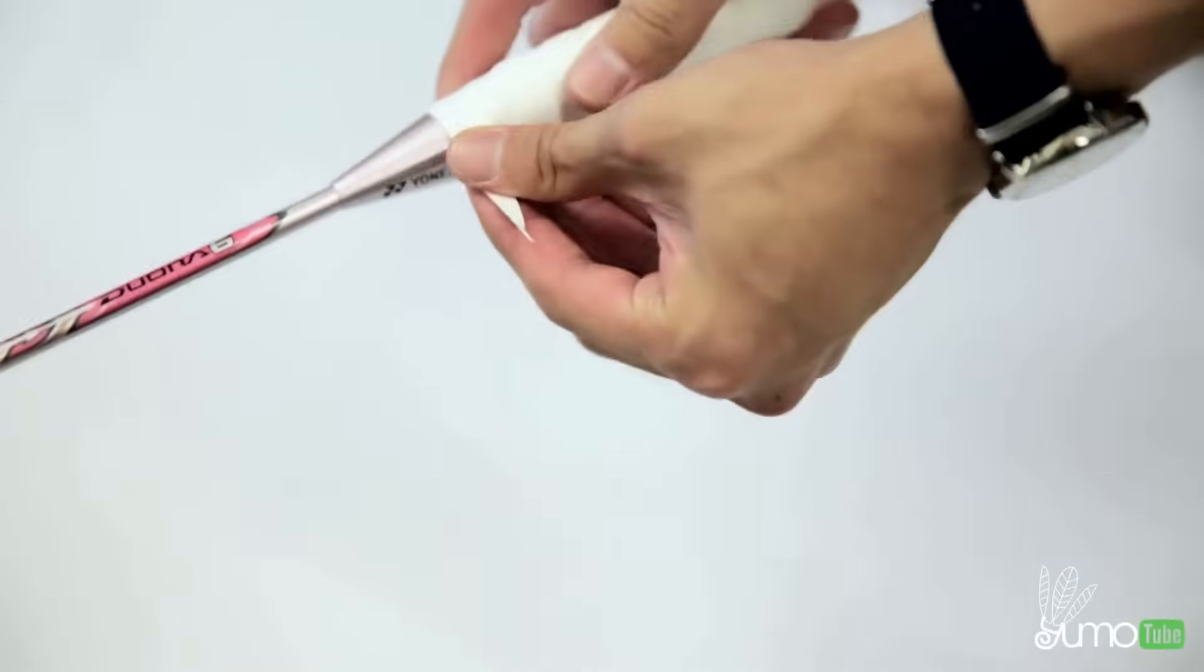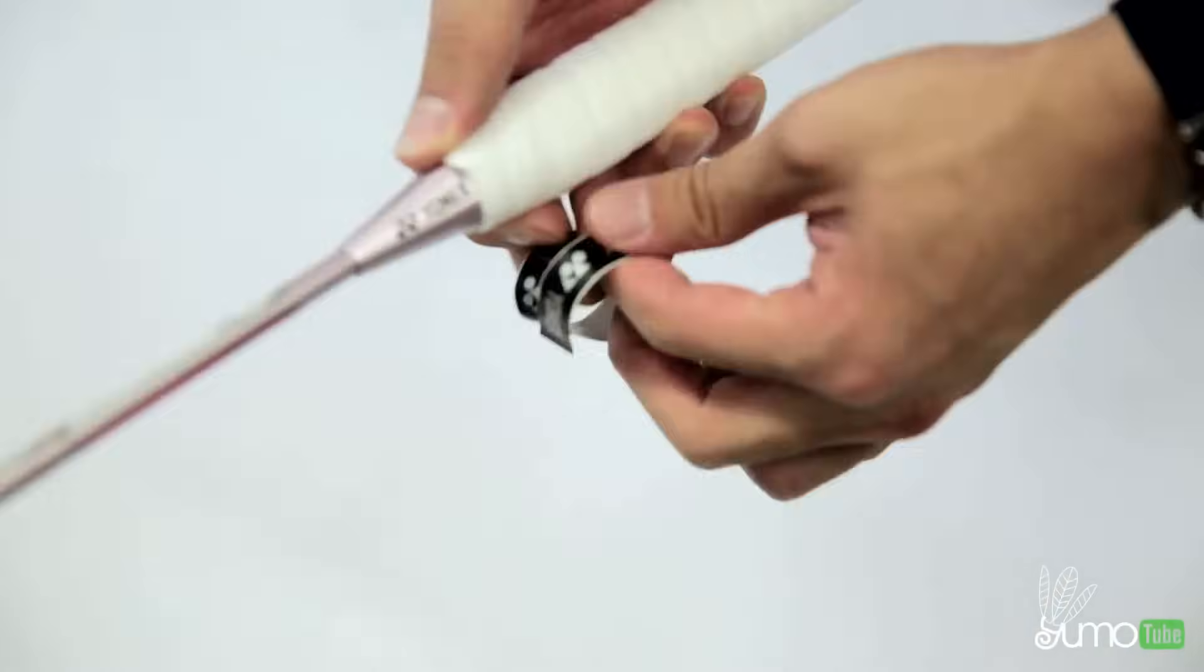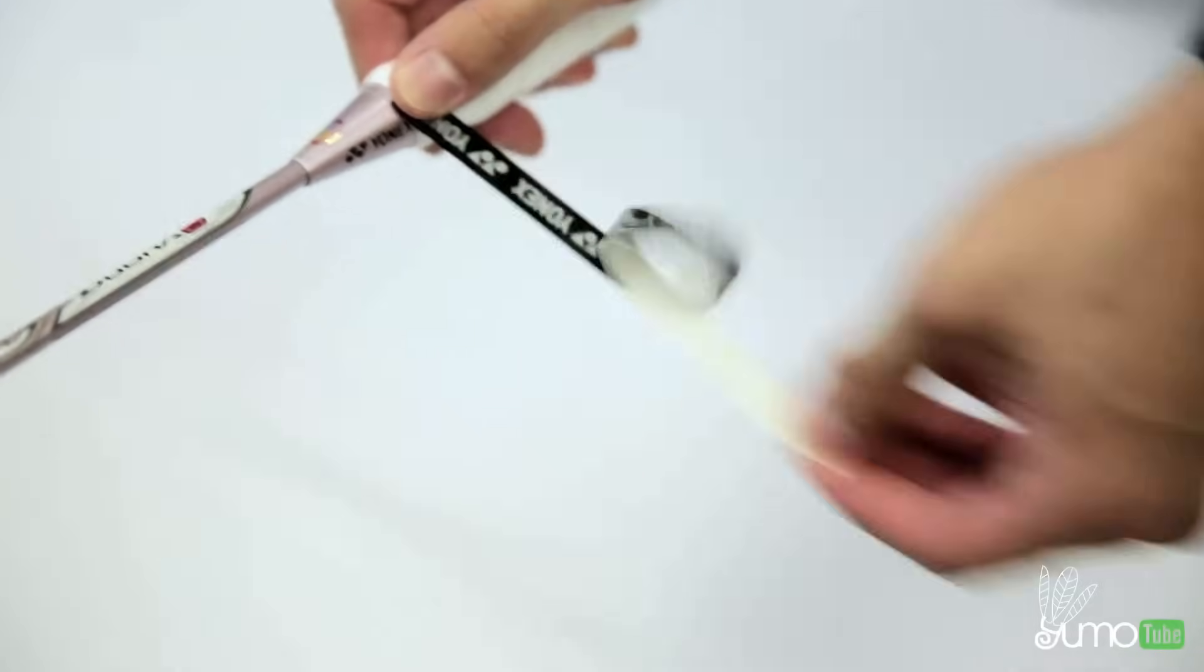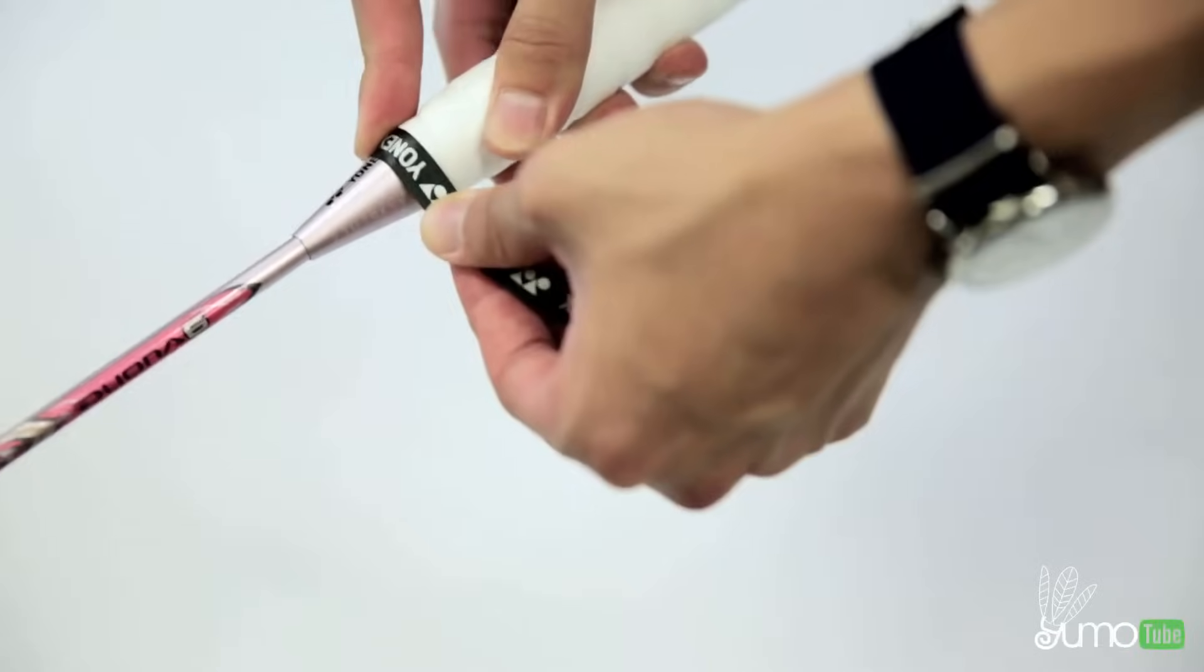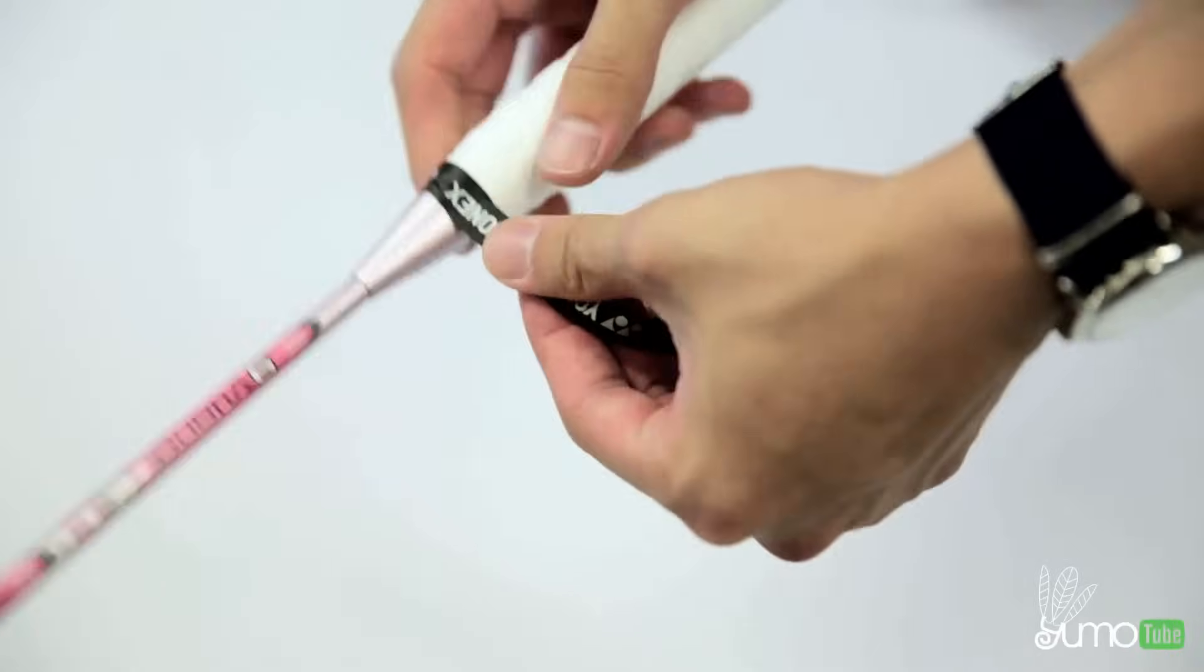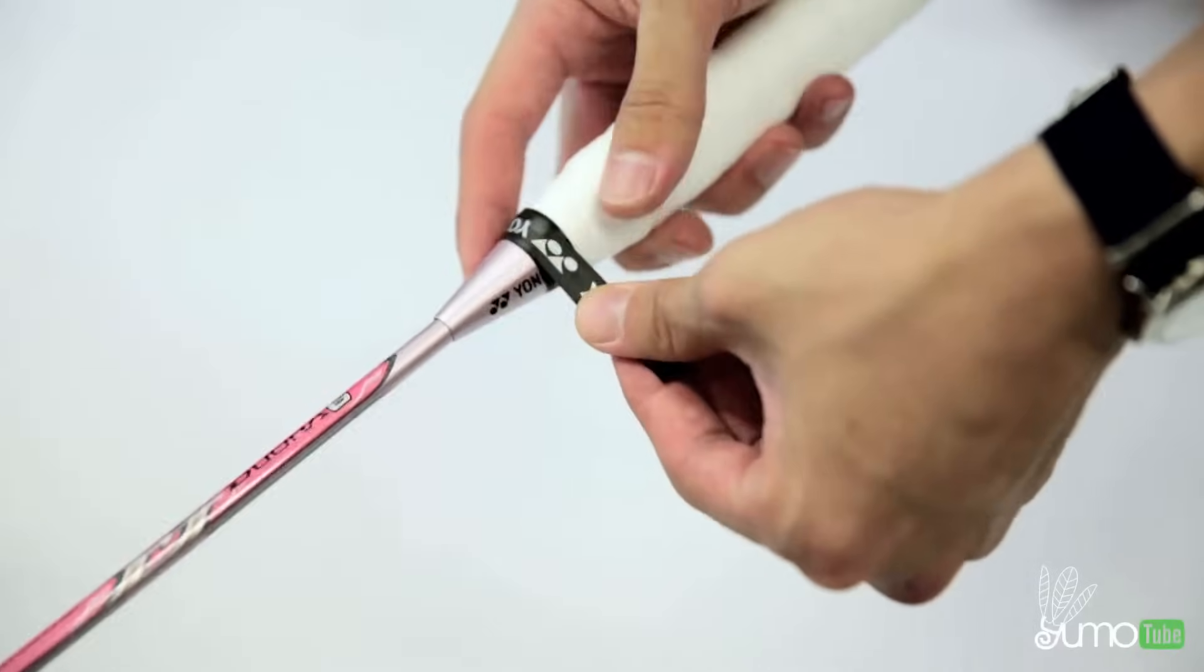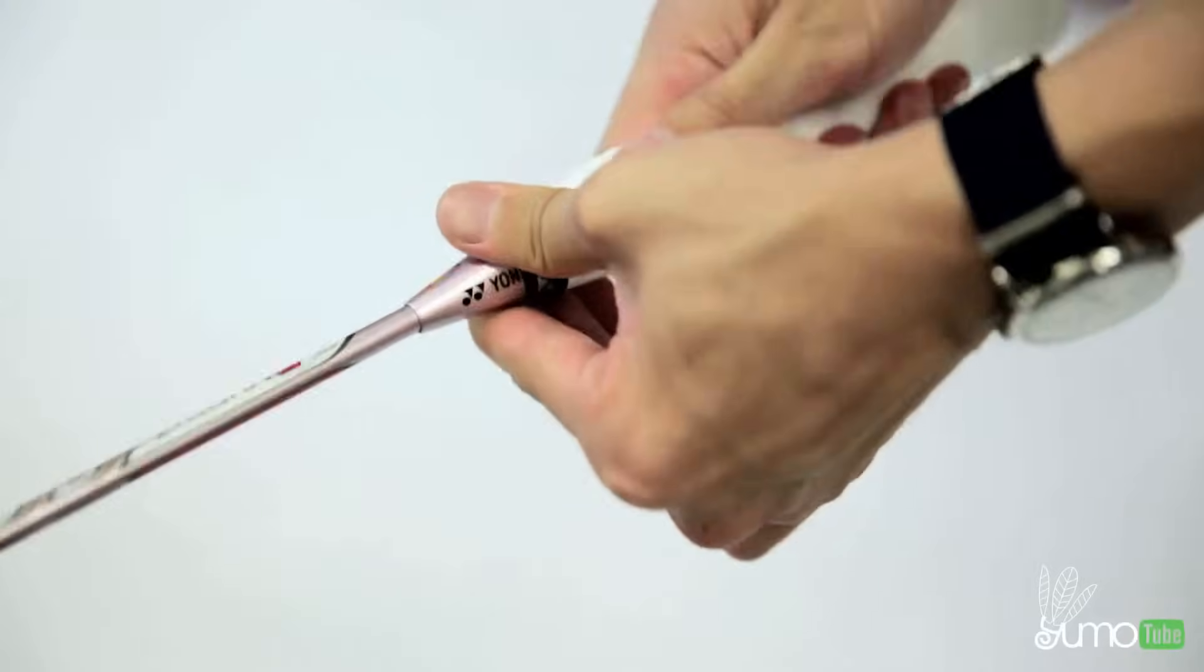Once you cut it, you just finish wrapping to the top right here. And then get your sticker, stick it on. And for the sticker part you want to give it a bit of a tug and stretch it. This way it sticks on better and won't come off. So just keep pulling on it whenever you turn the racket. And that is how you put on an overgrip.